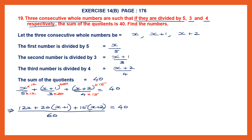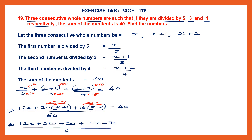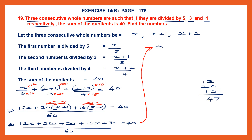Let's work this out. We have 12x plus 20 into x plus 20 into 1, which is 20x plus 20, plus 15 into x plus 15 into 2, which is 15x plus 30, all divided by 60, equal to 40. Taking like terms: 12x plus 20x plus 15x gives 47x, and 20 plus 30 is 50. So we have (47x plus 50) over 60 equals 40.